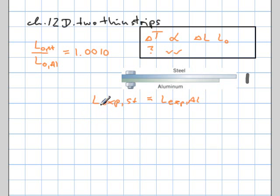And then the expanded length of the steel would be the original length of the steel plus the increase in length of the steel. And the expanded length of the aluminum would be the original length of the aluminum plus the delta L of the aluminum.